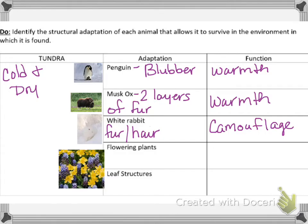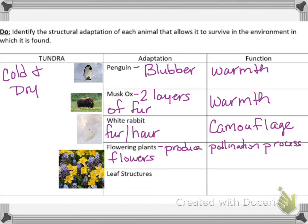The flowering plants — their adaptation is that they produce flowers. In the tundra, the warm time is short, like a month to a month and a half of a tundra summer. So they have to be able to bloom quickly and have pollination occur so they can keep those flowers in that area. They're able to bloom and pollinate in that short growing season.